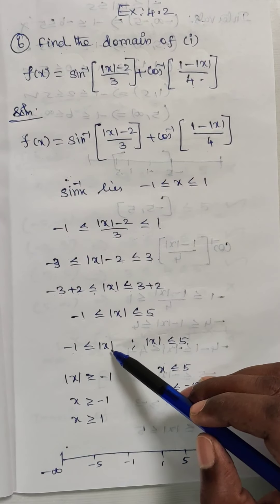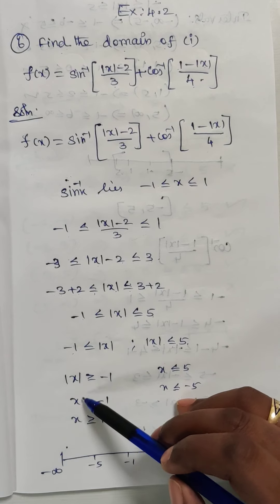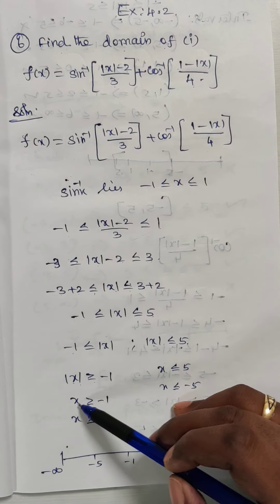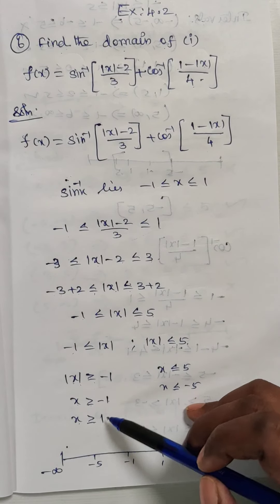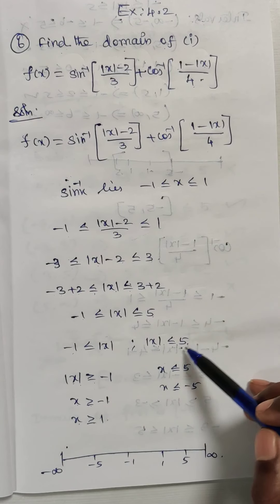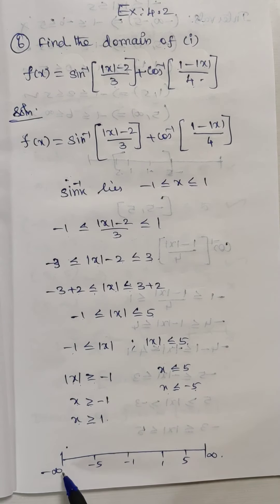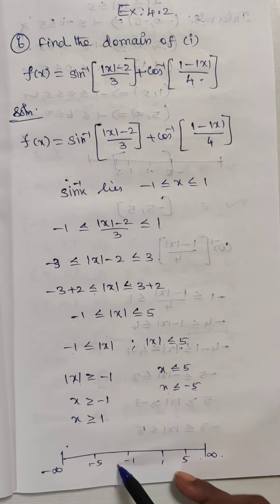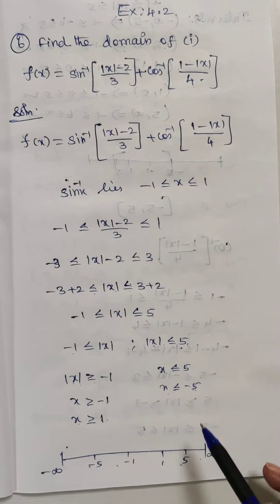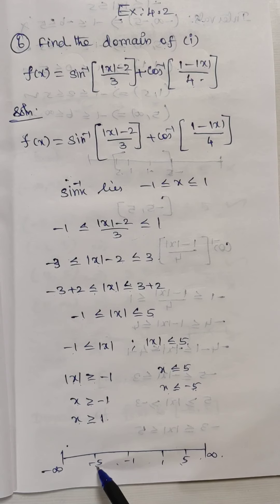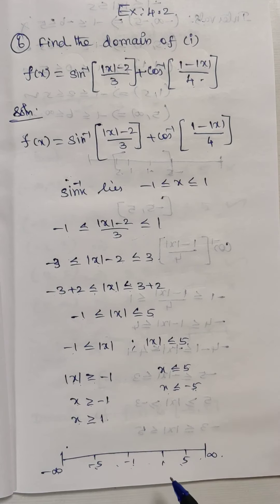Mod of x means plus or minus. So mod of x greater than or equal to minus 1 is replaced with x greater than or equal to minus 1 and x greater than or equal to 1. Now substituting these values on the real line from minus infinity to plus infinity, the key values are minus 5, minus 1, 1, and 5. So the intervals are: minus infinity to minus 5, minus 5 to minus 1, minus 1 to 1, 1 to 5, and 5 to infinity.